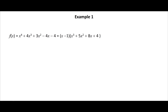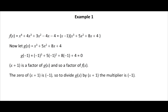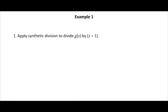Thus f(x) equals (x minus 1) times (x cubed plus 5x squared plus 8x plus 4). Now let g(x) equal x cubed plus 5x squared plus 8x plus 4. Then g(minus 1) equals zero, so x plus 1 is a factor of g(x) and therefore a factor of f(x). The zero of x plus 1 is minus 1, so the multiplier is minus 1. Now apply synthetic division to divide g(x) by x plus 1.